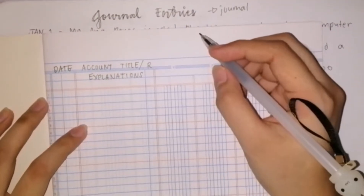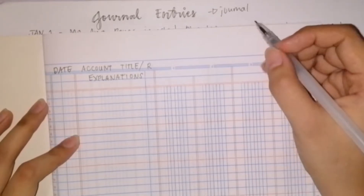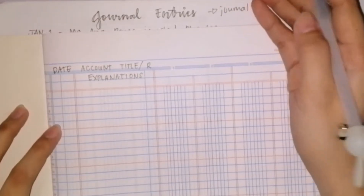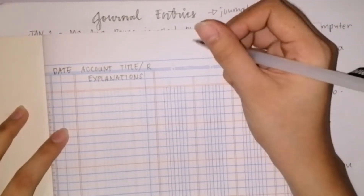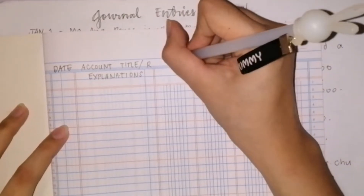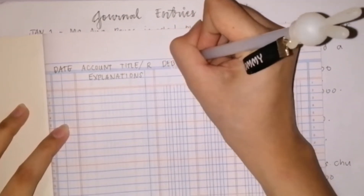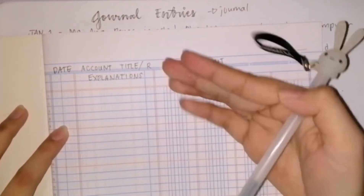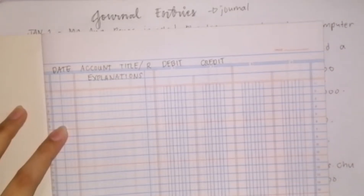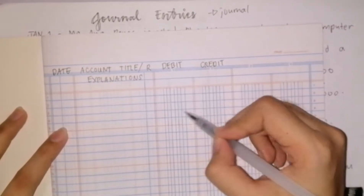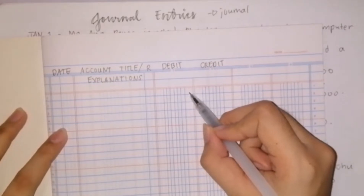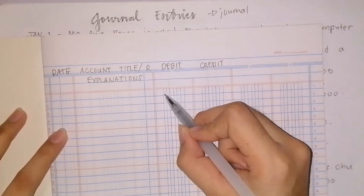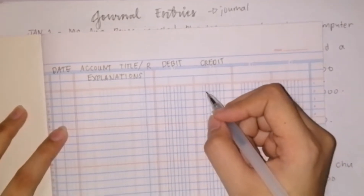The reference code is simply the account code. The notebook being used here is a four-column columnar notebook, but there are also two-column versions — we'll be using the two money columns. The first money column is for the debit and the second money column is for the credit. Numerical values are placed starting from the right side: decimal, ones, tens, hundreds, ten thousands, hundred thousands, and the large space at the beginning is for millions. The other side is set up the same way.